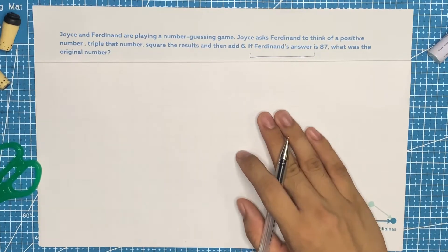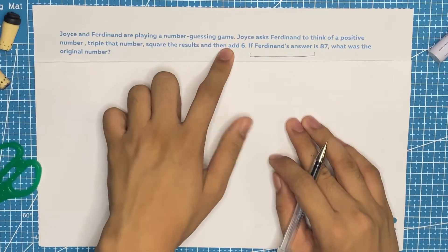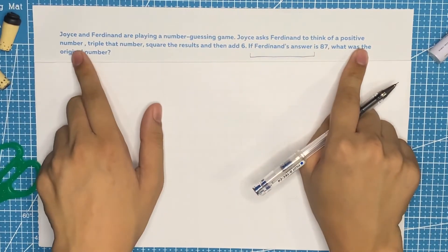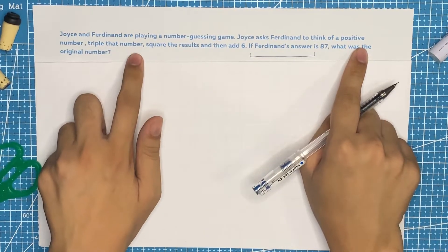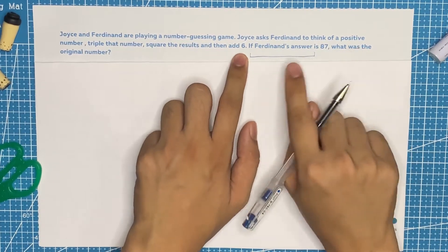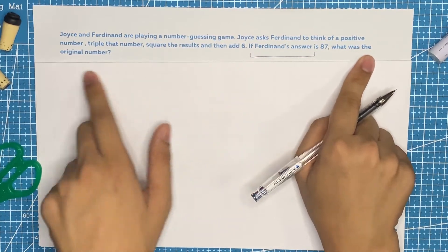The problem goes this way. Joyce and Ferdinand are playing a number guessing game. Joyce asked Ferdinand to think of a positive number, triple that number, square the results, and then add 6. If Ferdinand's answer is 87, what was the original number?